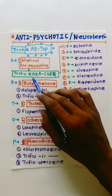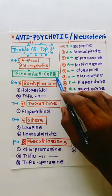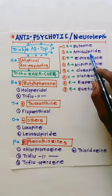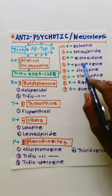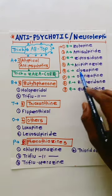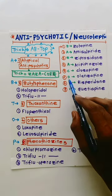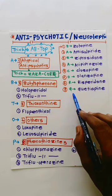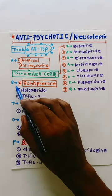The trick to remember this is ZAZACORQ. Z for zotepine, A for amisulpride, Z for ziprasidone, A for aripiprazole, C for clozapine, O for olanzapine, R for risperidone, and Q for quetiapine.